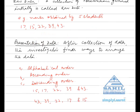There are three main methods: one is alphabetical order, the other is ascending order, and the third is descending order. In the ascending order, they can be arranged like 15, 17, 22, 39, and 43.